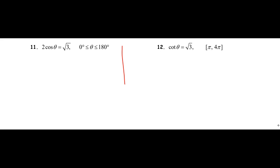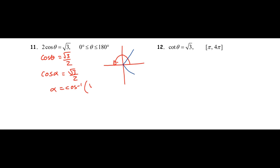Question eleven: the domain is zero to 180 degrees — half rotation. After isolating, cosine is positive and associated with the x-coordinate, so quadrants one and four. The reference angle is the inverse cosine of root three over two, which is 30 degrees. In the domain zero to 180, only the quadrant one angle applies, so the answer is simply 30 degrees — quick and easy.